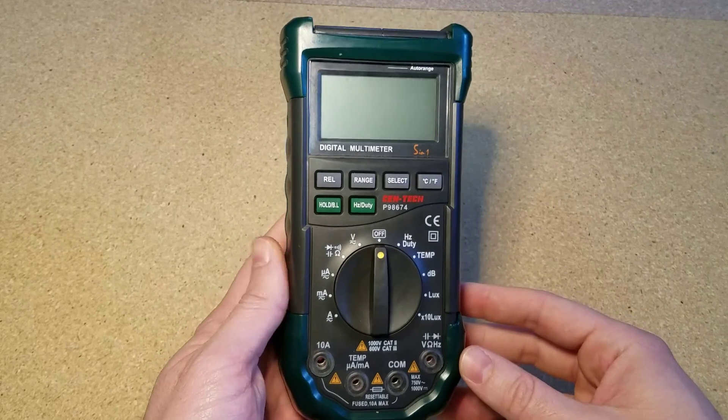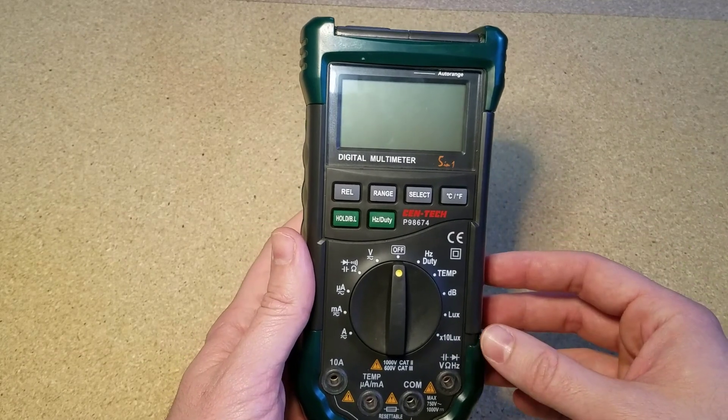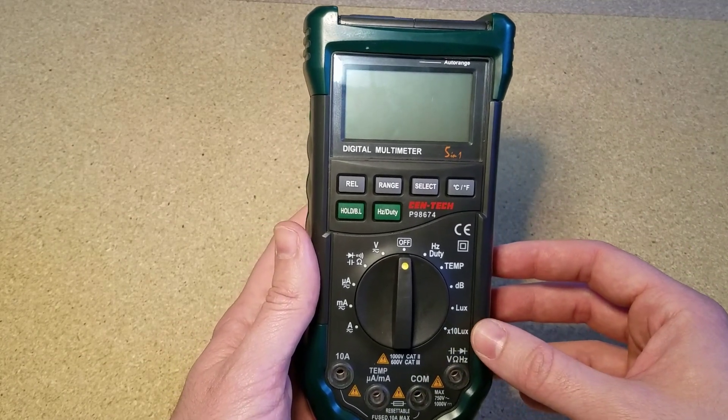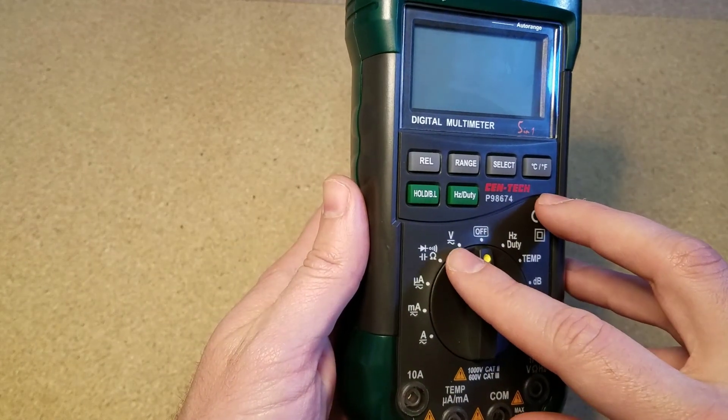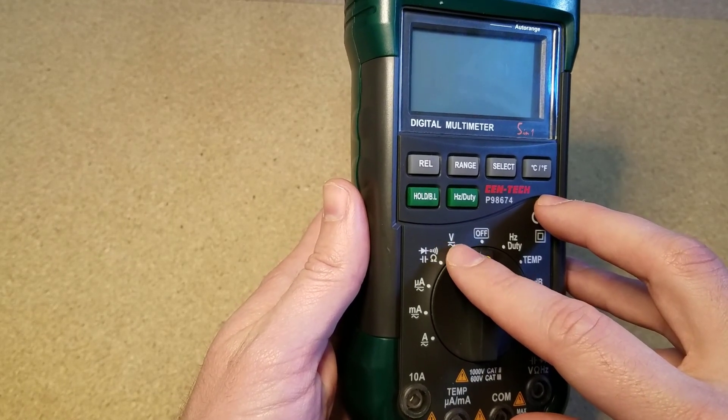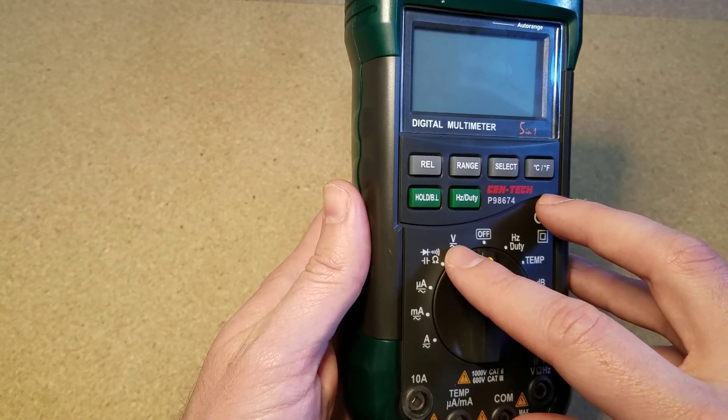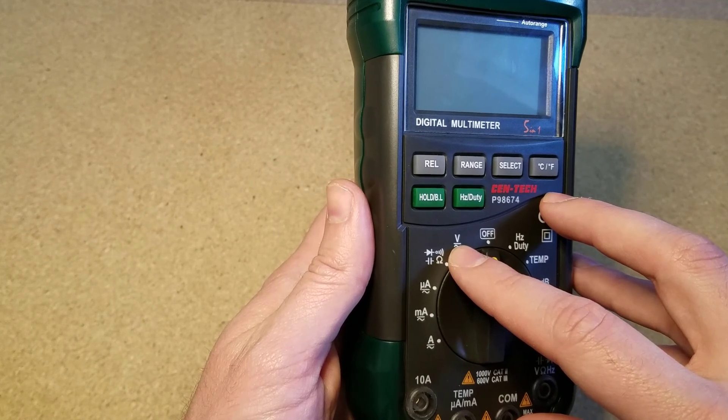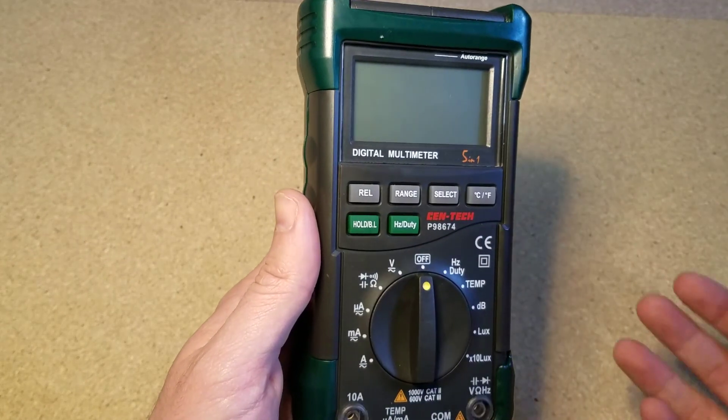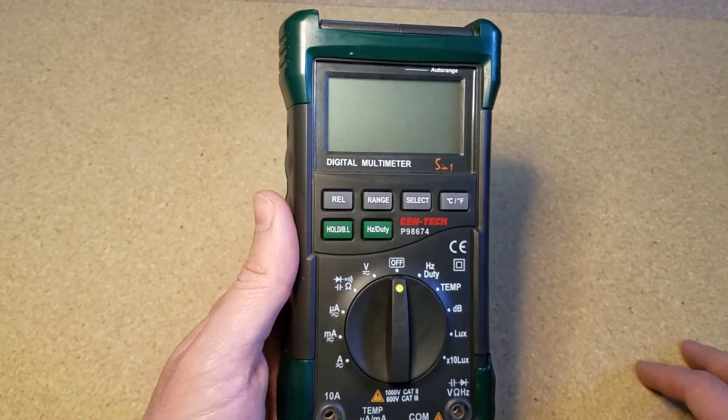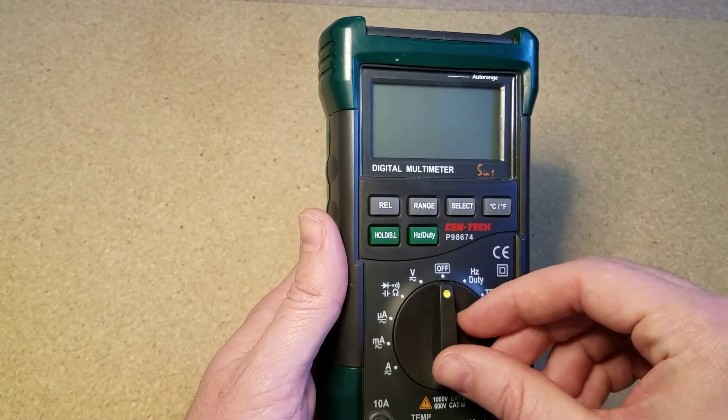All right guys, so this is the digital multimeter and this particular one is an auto-ranging meter, which basically means that it'll automatically adjust itself for the voltage range that I'm measuring. Now if I want to set it up to measure voltage, I'm looking for this setting right here. There's a V, a line under it, and then a wave under that. The V stands for voltage, the straight line means that it measures DC voltage, and the wave means that it measures AC voltage. So thanks to the auto-ranging feature, this multimeter, whether I'm measuring a 12 volt DC system or a 480 volt AC system, all I have to do is turn the dial to this setting and I'm good to go.